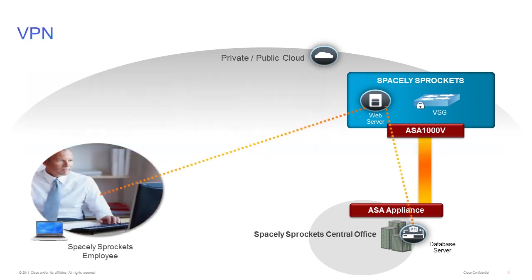Let's focus on Spacely Sprockets for a moment. They have a physical ASA firewall protecting their data center, and now they have this new ASA 1000v cloud firewall protecting their cloud environment. They can create a VPN tunnel between these firewalls, essentially extending their existing network into the cloud with the same visibility, accessibility, and control over the cloud that they have over any other part of their network. So when a Spacely Sprockets employee or customer connects to that web server, the web server can access the database server through the VPN tunnel.